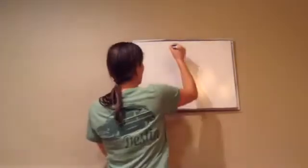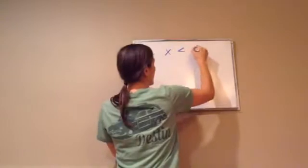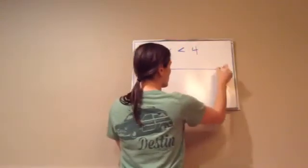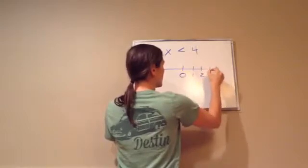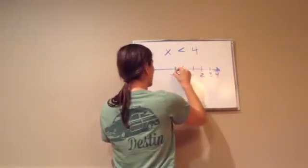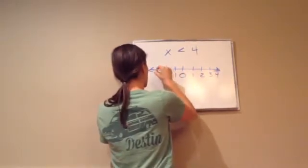Now, for example, if I were to tell you to graph this, x is less than 4. What you would do is you would draw a number line. On both sides, you can just fill that out.